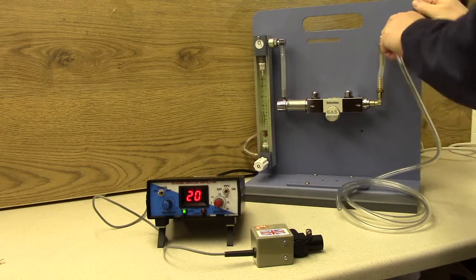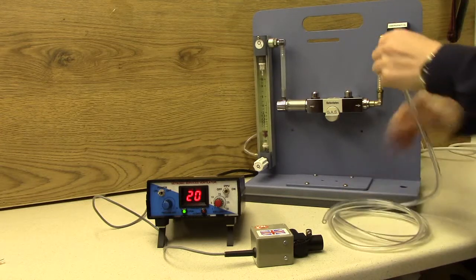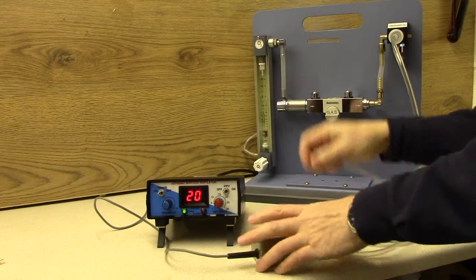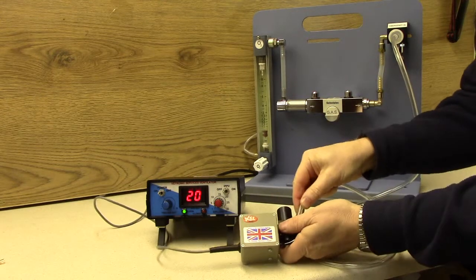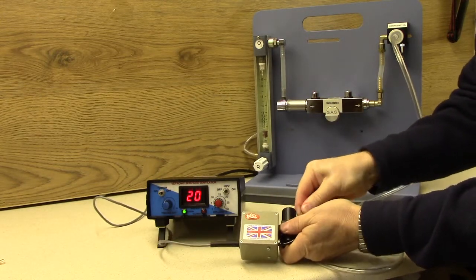You'll need a supply of fresh gas from your anaesthetic machine, so connect the 22mm connector to the fresh gas outlet and the other end of your clear tubing to the oxygen inlet port of the valve.